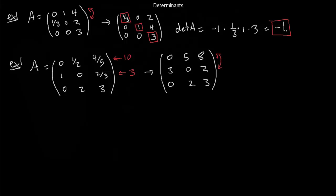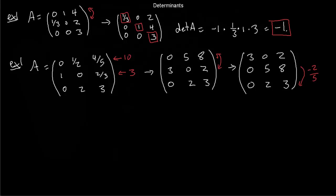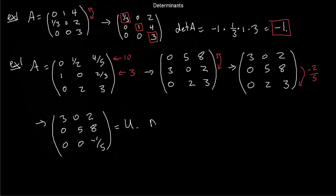One more row operation: multiply by minus 2/5 times row 2 and add it to row 3. The resulting upper triangular matrix U is: 3, 0, 2; 0, 5, 8; 0, 0, −1/5. The determinant of U is 3 times 5 times −1/5, which equals −3. To find the determinant of A, we track what we did: there was one row swap (−1), we multiplied one row by 3, and another by 10. So det(A) = det(U) / (−1 · 3 · 10) = −3 / −30 = 1/10.